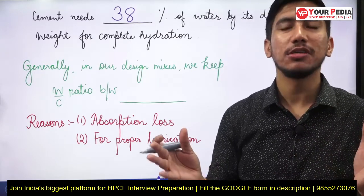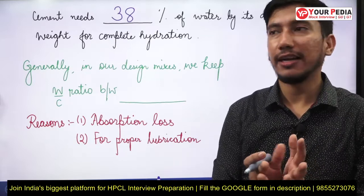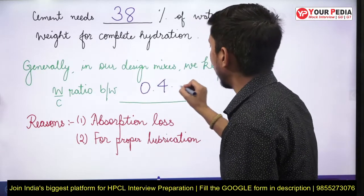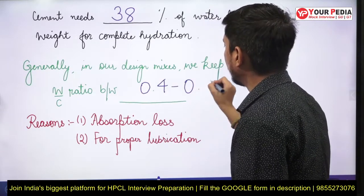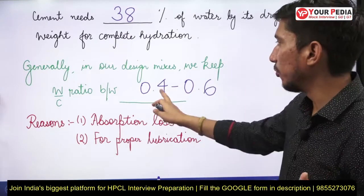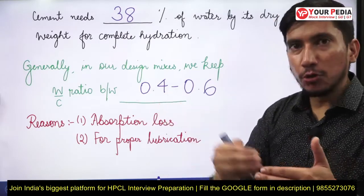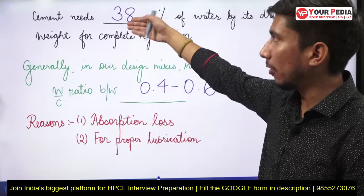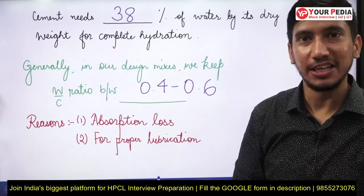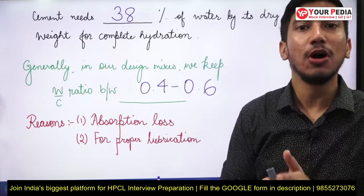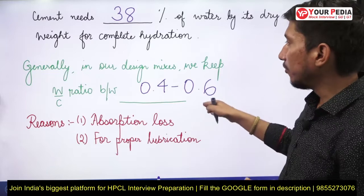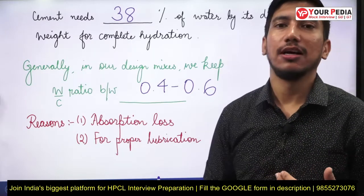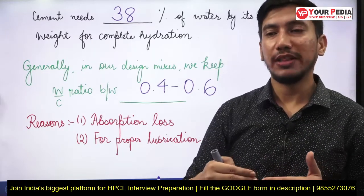When we prepare a design mix at site, we usually keep the water-cement ratio in the range of about 0.4 to 0.6. It is obvious why we don't go below 0.4 — because you need about 40% water for complete hydration, you cannot go below that.